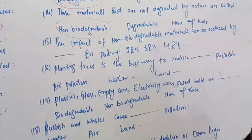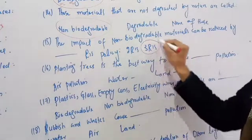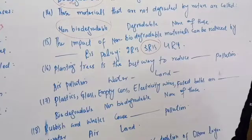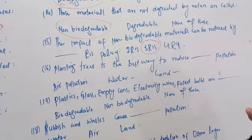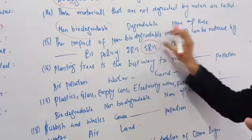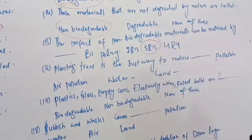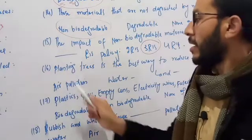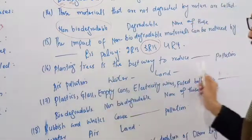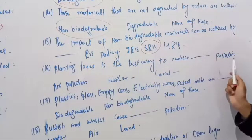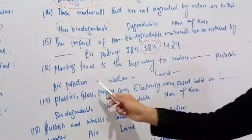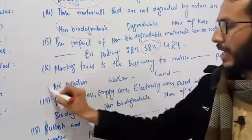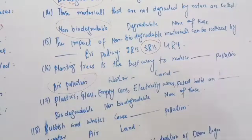The impact of non-biodegradable materials can be reduced by the 3Rs policy: reduce, reuse, and recycle. Planting trees is the best way to reduce air pollution.